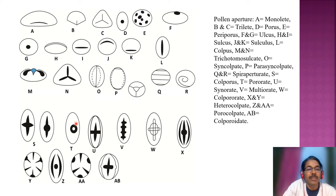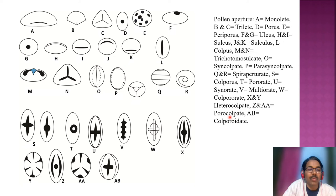T shows pororate — pore within pore. U is synorate, V is multi-orate, W is colpororate, X and Y are heterocolpate, Z and AA are porocolpate, and AB is colporoidate.